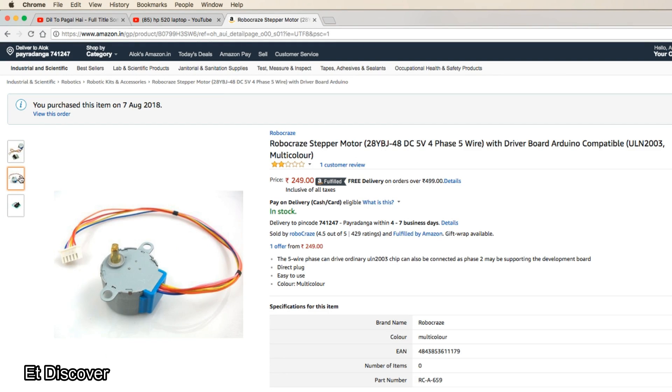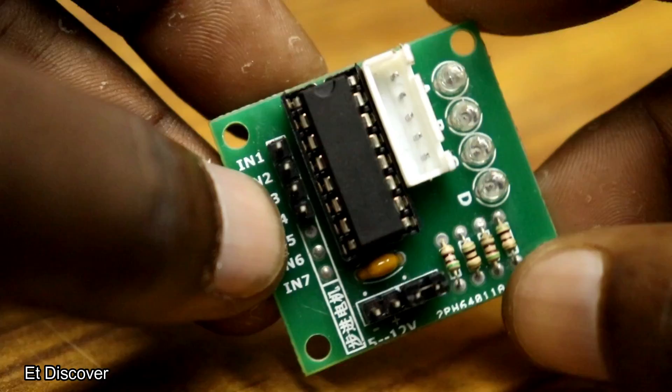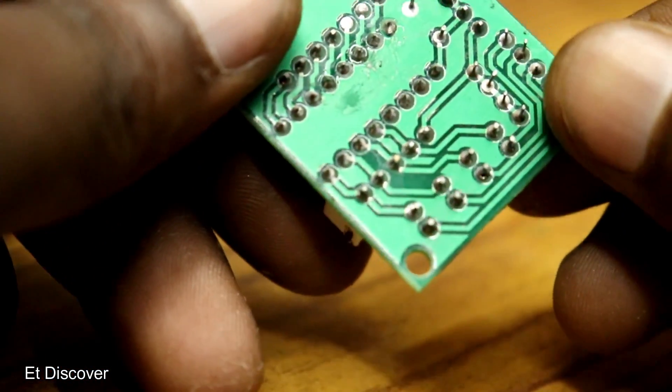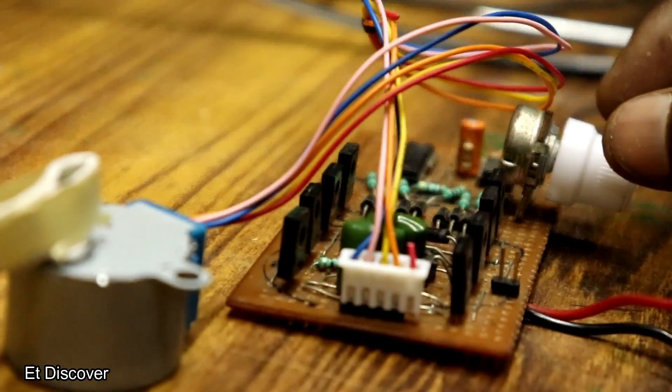Recently I found on Amazon a 28BYJ48 motor. A ULN2003 controller board comes with this IC. This is quite beautiful and even though it looks small, it has a high torque.